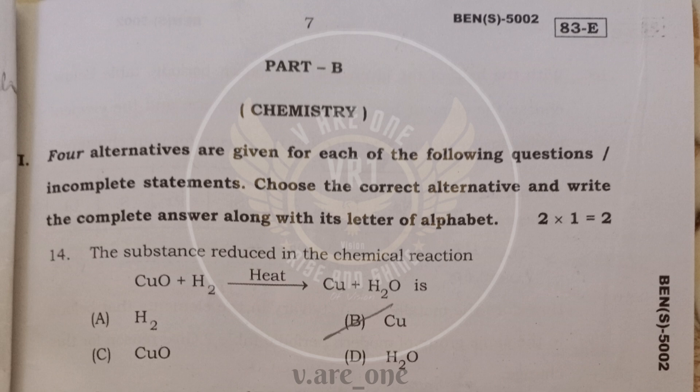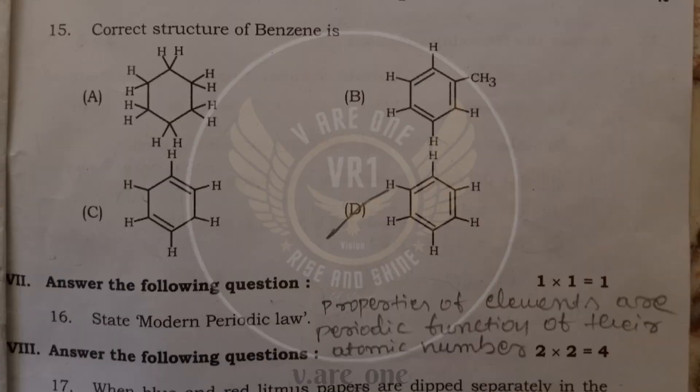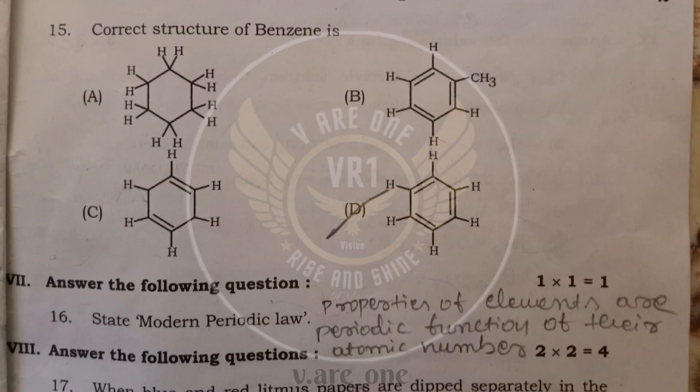In part B, we have chemistry. 14th question is MCQ they have given. And 14th question, the substance reduced in the chemical reaction. Here copper is reduced. Option B, copper is the correct answer. In 15th question, correct structure of the benzene is option D.